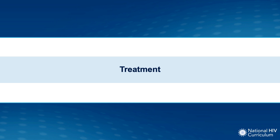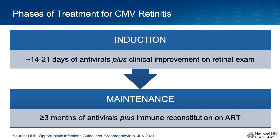The treatment of CMV retinitis is divided into two phases. You have an induction phase, which is more intensive, usually recommended to last for about 14 to 21 days, and involves a higher dose of systemic anti-CMV therapy as well as documented clinical improvement on a retinal exam. Then you have a maintenance phase, which follows induction, involves a lower dose of anti-CMV antiviral therapy, and can be continued for three months or longer. Completion of maintenance therapy also involves immune reconstitution on combination ART.